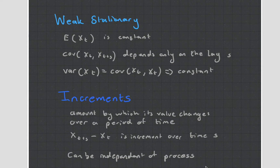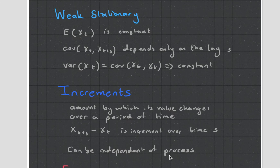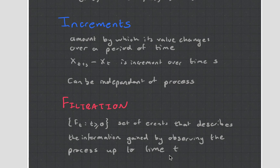Then you have increments, which are the changes between two consecutive values on a stochastic process. Then there's something called filtration, which is kind of like observing the process over a long period. It's quite a difficult mathematical concept to get your head around.